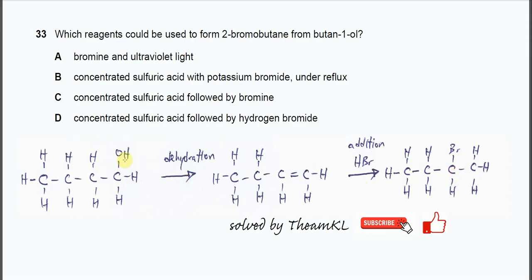So which means now the butane-1-ol needs to undergo dehydration. So to remove the OH and the H, eventually form this butene-1. So the dehydration of alcohol, we need to use concentrated sulfuric acid. So therefore it could be B, C or D.